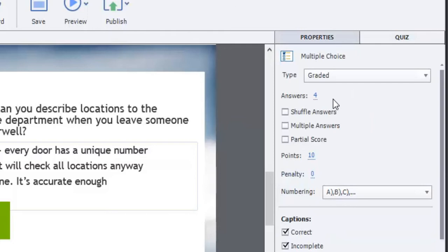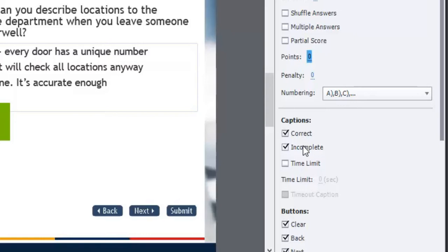I've already changed it to have four answers. I don't want to shuffle those answers, I don't want multiple answers, and I don't want a partial score. I do want to make this simply a knowledge check question that the learners will complete partway through the course. It's not going to contribute to their final score, so I'm going to make the points equal zero. There is a correct and an incomplete caption. I'm actually not going to use the correct caption in this case, and you'll see why in a little bit, so I'm going to uncheck that.